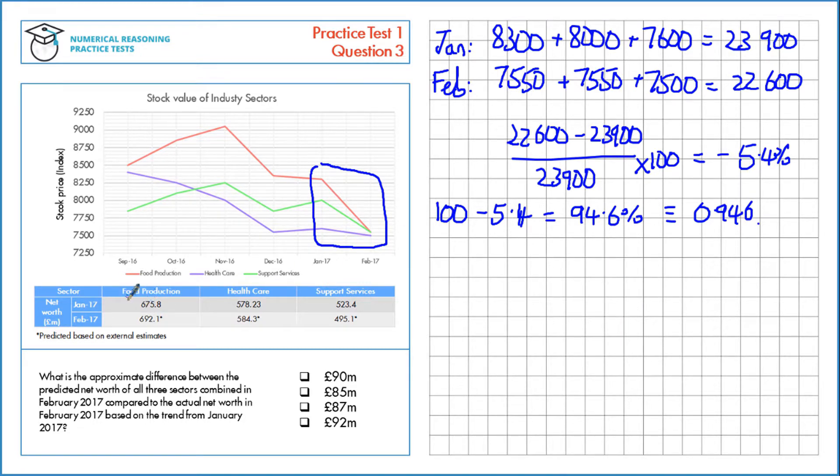If we look at the net worth for January, we have these three values. We're looking at the total net worth, so we want the sum of those. If we add all these together, we get a total of 1,777.43 billion.